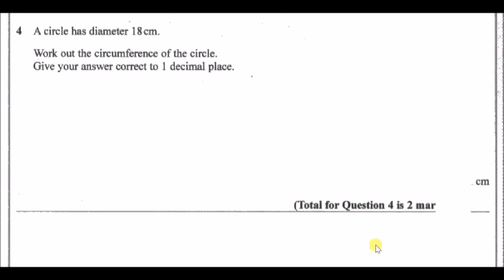Number four: A circle has a diameter of 18 centimeters. Work out the circumference of the circle, give your answer correct to one decimal place. We need to know the circumference formula which is either 2πr where r is the radius, or the circumference is π times the diameter D. We'll use the second formula since the diameter is 18, so it's just π times 18. Smashing this in your calculator you're going to get 56.5 centimeters to 1 decimal place.